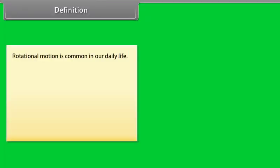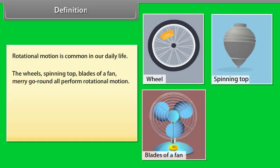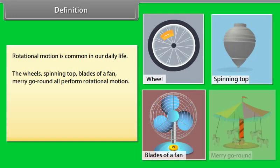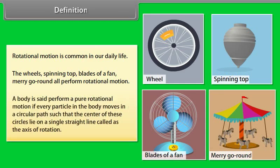Rotational motion is common in our daily life. The wheels, spinning top, blades of a fan, and merry-go-round all perform rotational motion. A body is said to perform a pure rotational motion if every particle in the body moves in a circular path such that the centers of these circles lie on a single straight line called the axis of rotation.